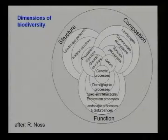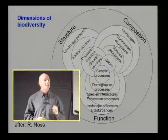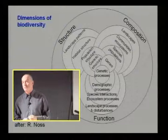Biodiversity also occurs at different spatial and temporal scales. From the center here — the writing may be a bit small — we go from genetic structure: within a single population of a single species, we have a diversity of genetics, so that's one form of biological diversity — the variation in genetics between individuals in a population.